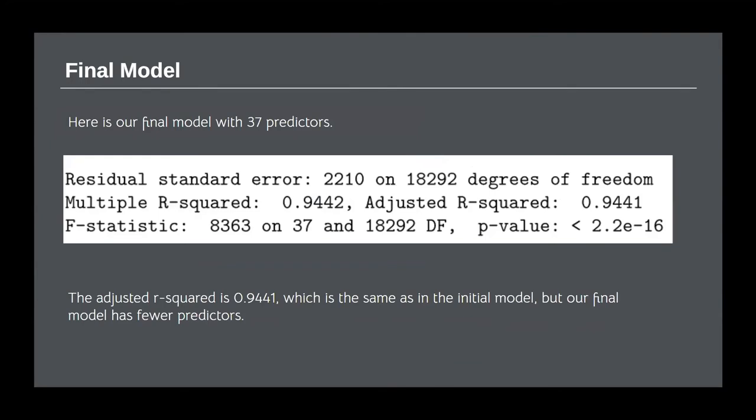Here's our final model. We obtained an adjusted R-square of 0.944, which is the same as in the initial model, but now our model has fewer predictors.